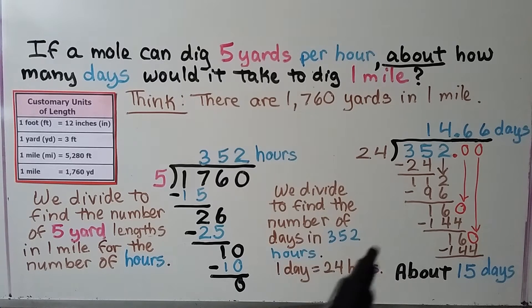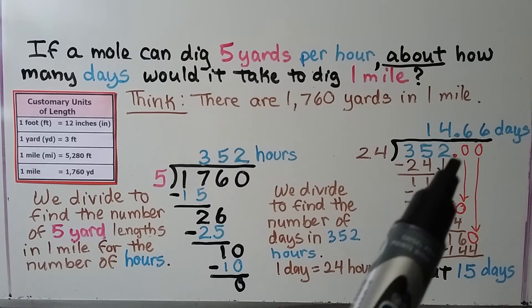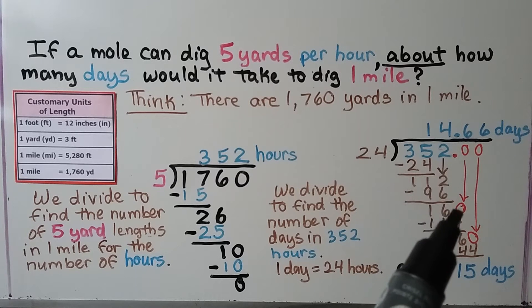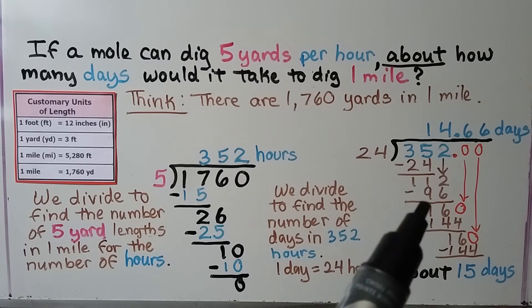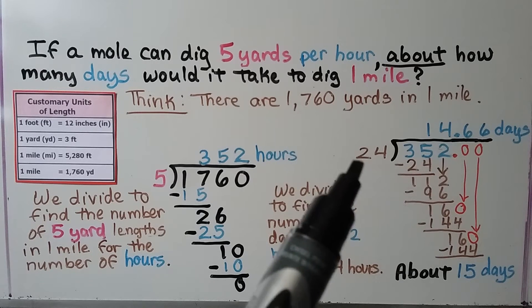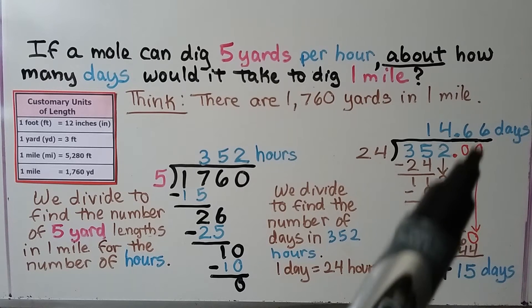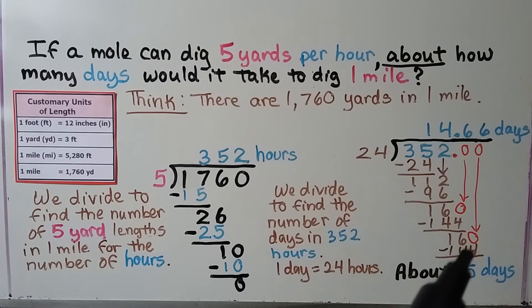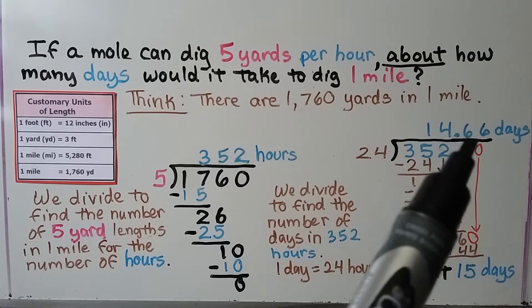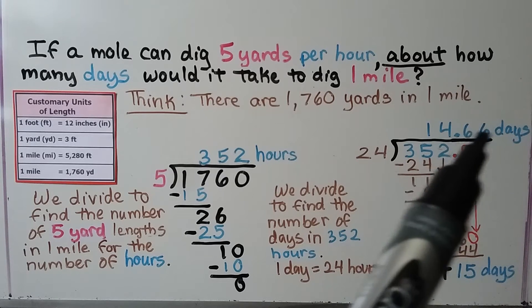24 can't fit into 16. So we can add a decimal point and a zero. We drop the zero down. 24 fits into 160 six times because 24 times 6 is 144. When we subtract, we get another 16. We try dropping down another zero, we get another 144. And this could keep going on and on. So let's stop at two sixes in the decimal places.